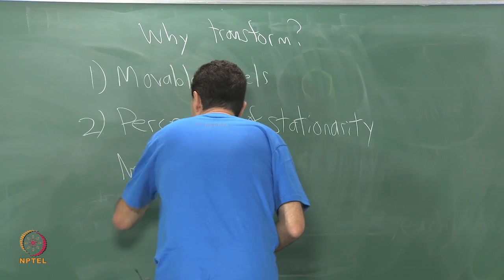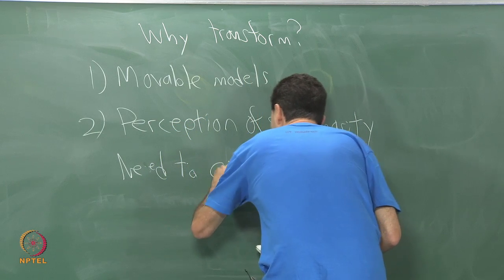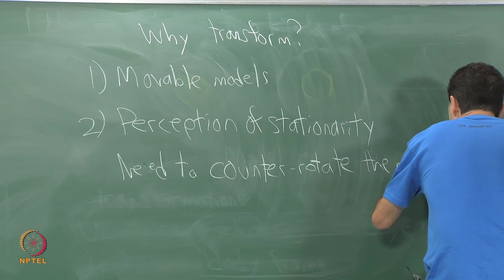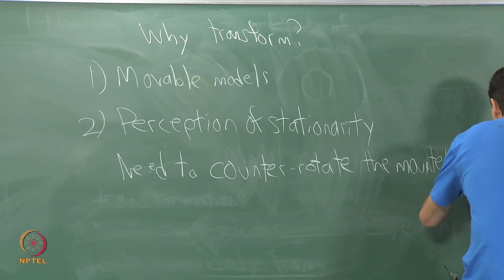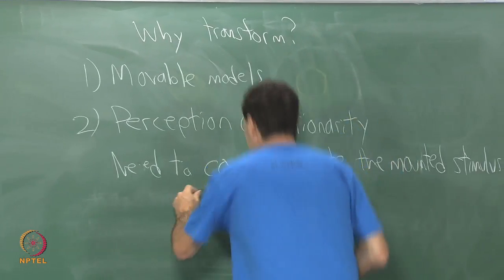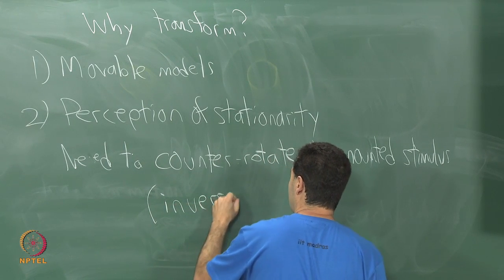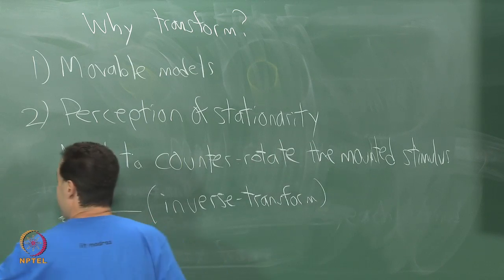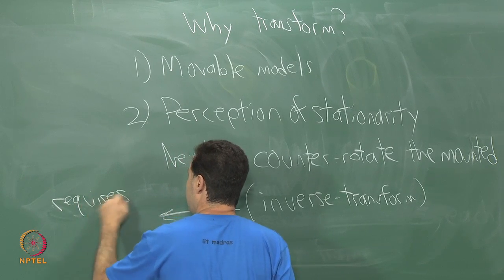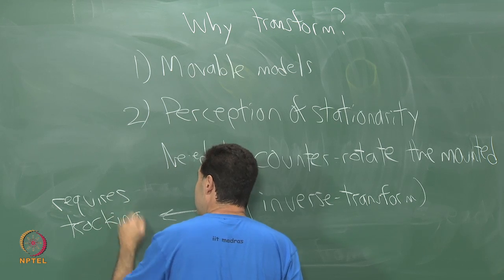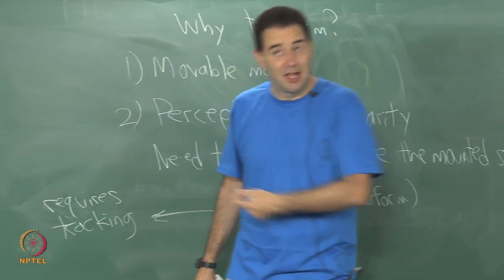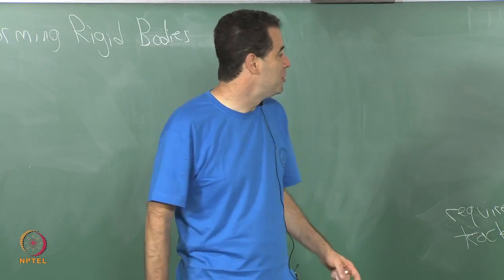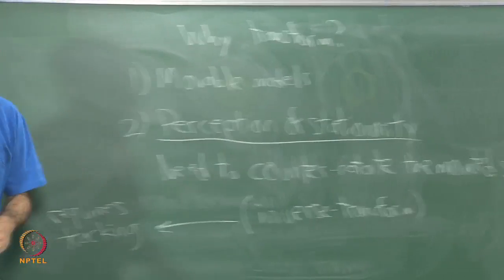We need to counter-rotate the mounted stimulus, or more generally, more general than counter-rotate is inverse transform. And because we have to do that, this requires tracking or filtering estimation, whatever you like to call it. We need to use sensors and estimate the motion that has occurred of a human body, and then when we figure out what that transformation was, we apply the inverse of it to compensate to give you again this great idea, the perception of stationarity. That makes sense?